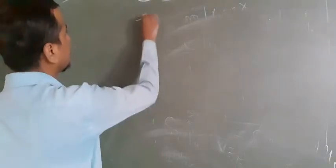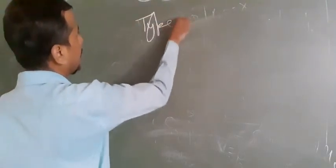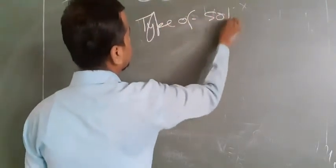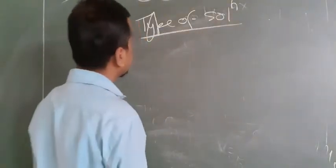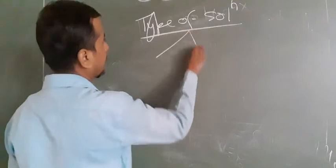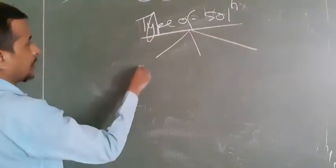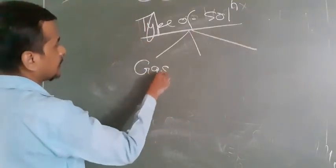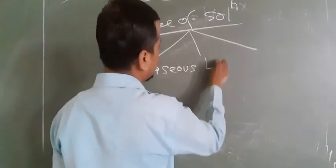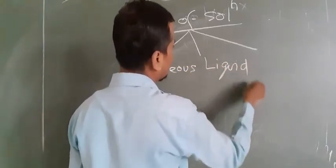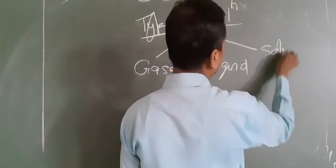By this way, you can find polar and non-polar compounds, and also determine solubility. Now let us focus on the types of solutions. Solutions are basically 3 types: one is known as gaseous solution, second is liquid solution, and third is solid solution.